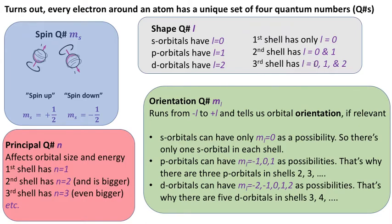And the third shell has l equals zero, one, and two, which means it has all three. And we can keep on going up there.